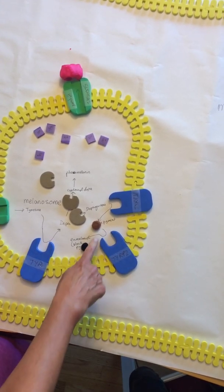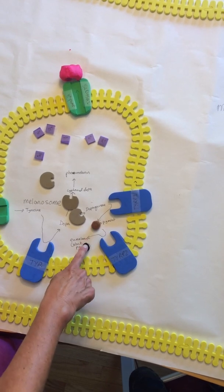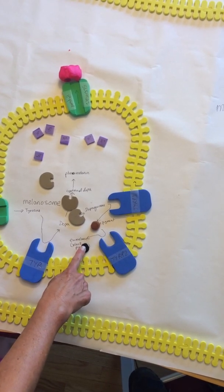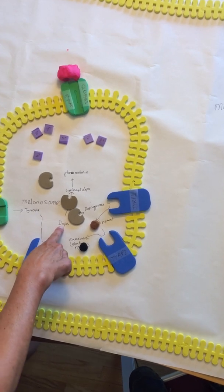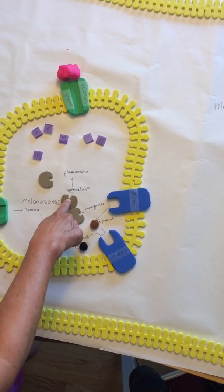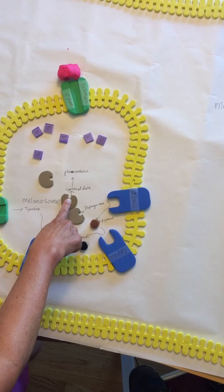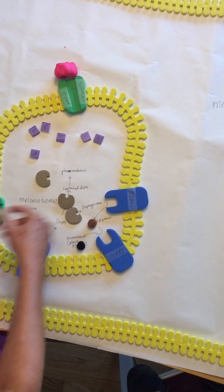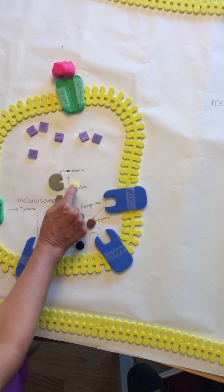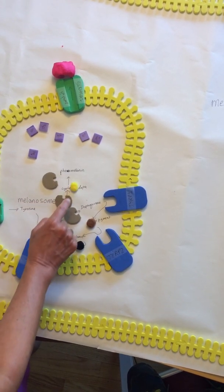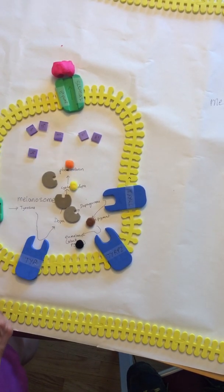Now, how do you make the reddish-orange pigment? If the dopa, instead of going this way, gets acted on by this enzyme, you'll make cysteinyl-dopa, which is an intermediate. Then this enzyme can work on cysteinyl-dopa and produce the pheomelanin.